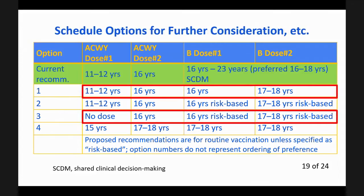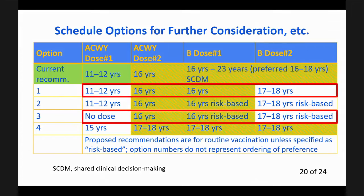The workgroup preferred option one or three, as noted by the red boxes here. The diagonal shading on this slide depicts doses of MenACWY recommended at the same age as doses of MenB — in other words, instances in which the pentavalent vaccine may be an option.